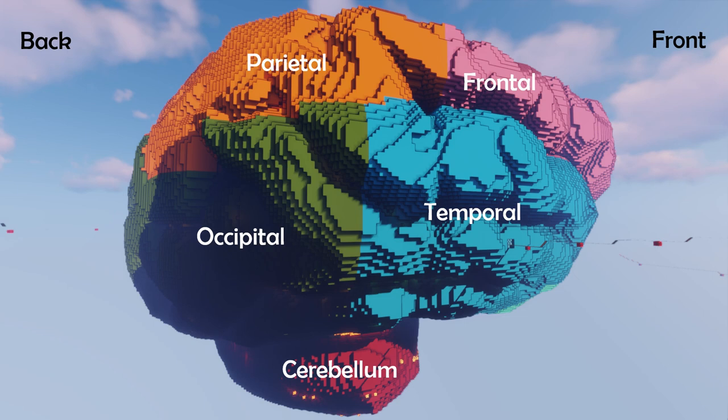We don't really know why vision is processed at the back of the brain, but it's an interesting thing. The orange parietal lobe processes touch, temperature, pressure, and pain. Then there's the temporal lobe — my favorite, as I've done a lot of work with it — responsible for hearing, language, and memory. The frontal lobe handles your executive function: reasoning, decision making, emotions, and planning.